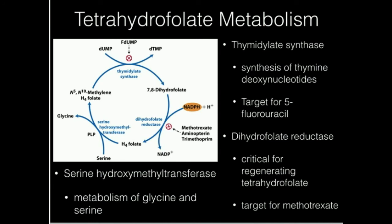Another target in folate metabolism is dihydrofolate reductase. Methotrexate is a tetrahydrofolate analog that inhibits dihydrofolate reductase. Wherever you inhibit in this cycle, it shuts down the entire pathway. Methotrexate, aminopterin, and trimethoprim are all used as anti-cancer drugs because they ultimately shut down thymine synthesis, making them oncostatic — preventing cancer cells from replicating.